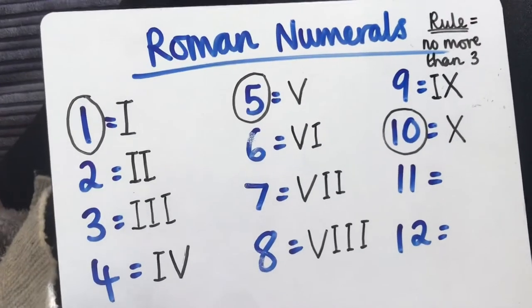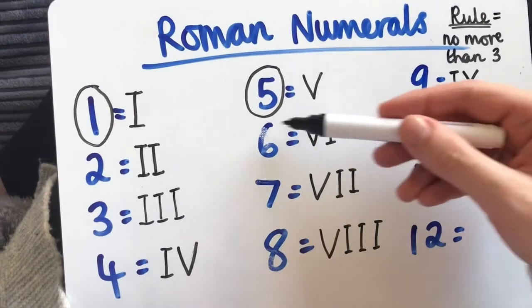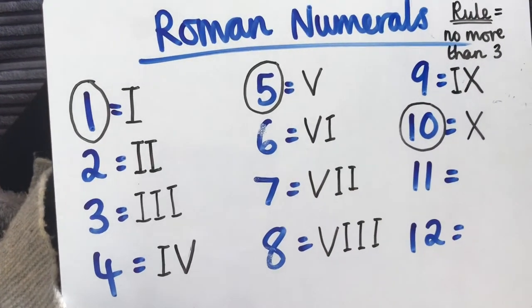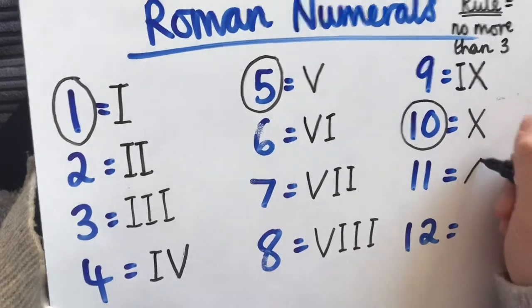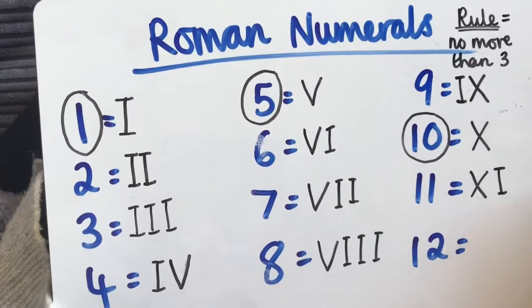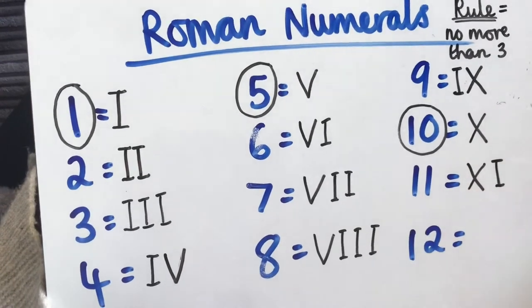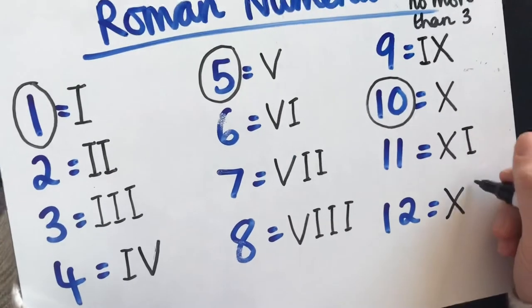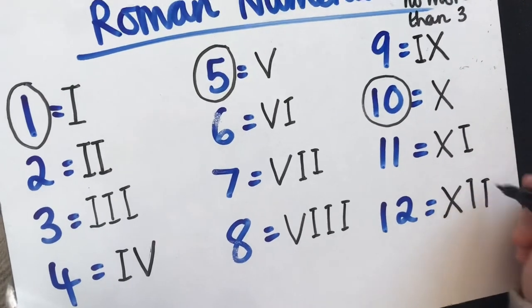For number 11, if you look at number 6, you might be able to figure out what number 11 will be. Number 11 will be X-I because it's one after 10. So 10, 11. Number 12 would be X-I-I.